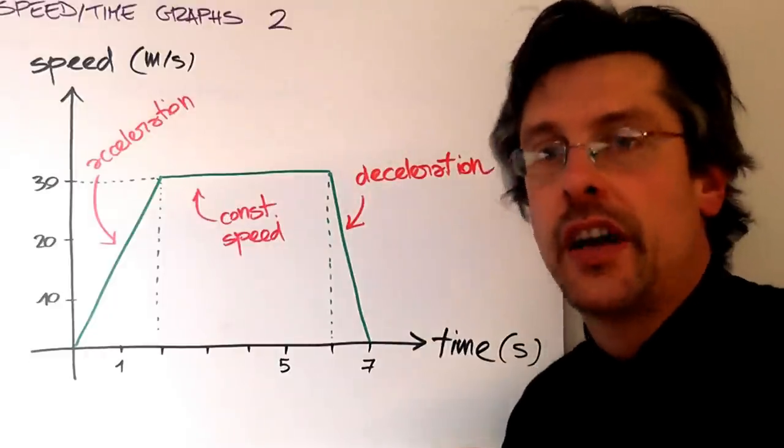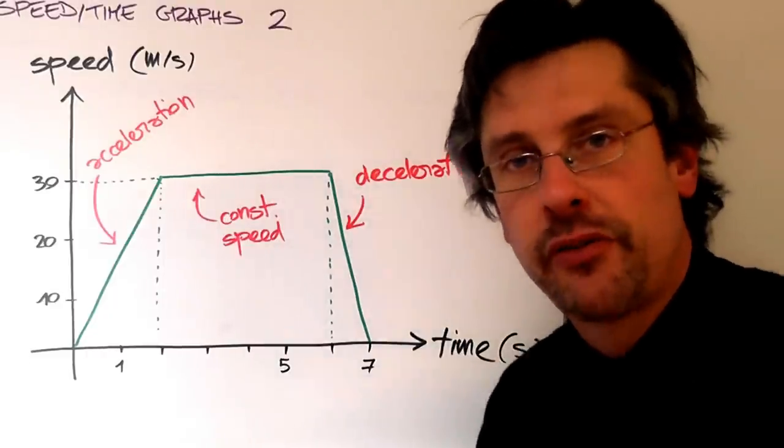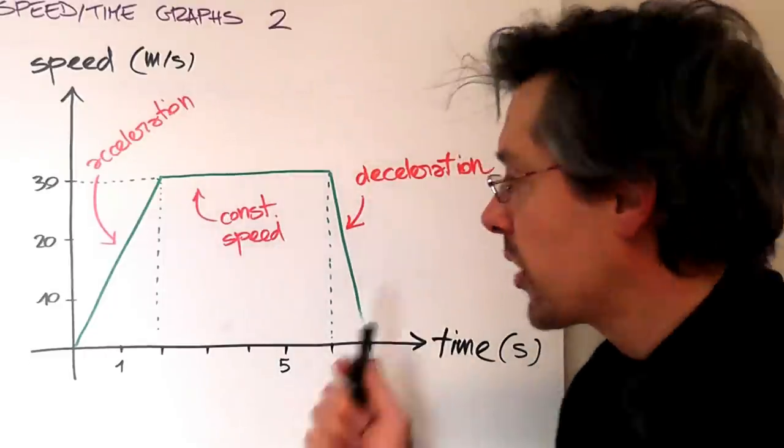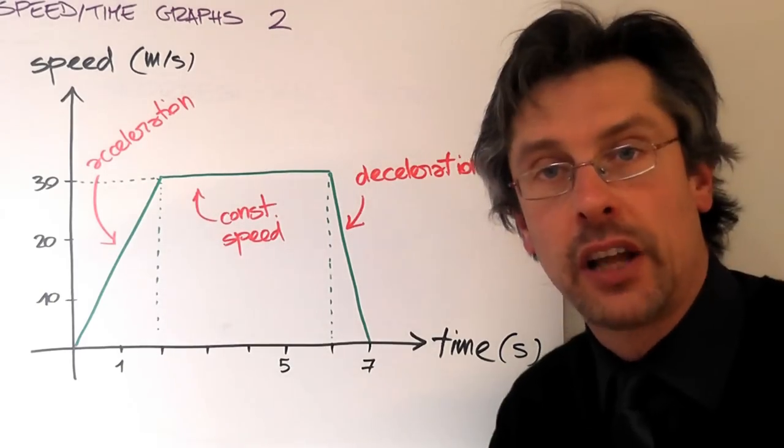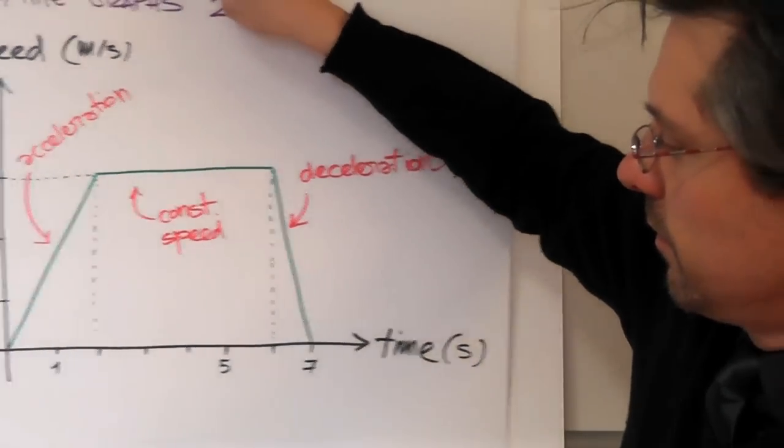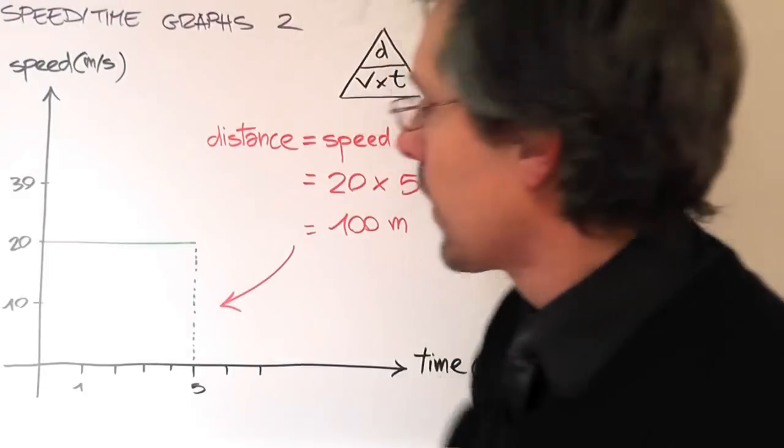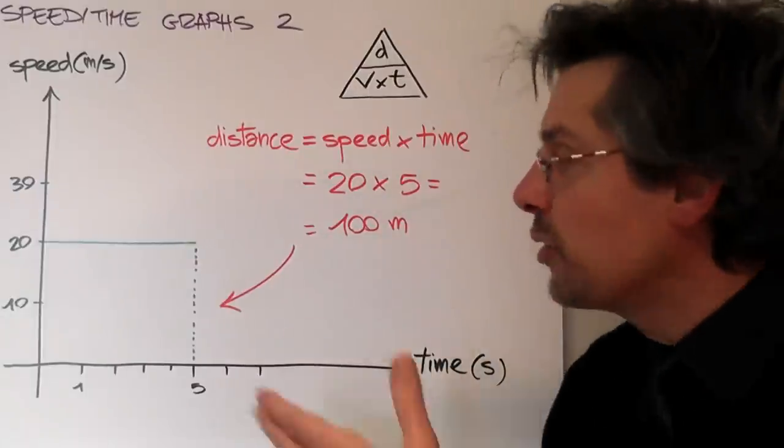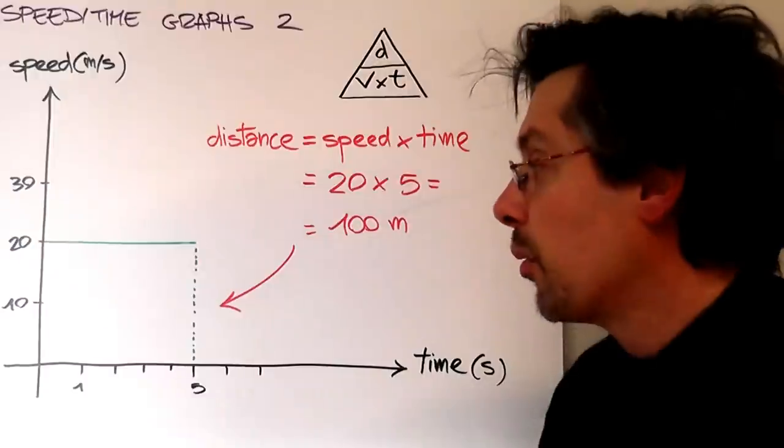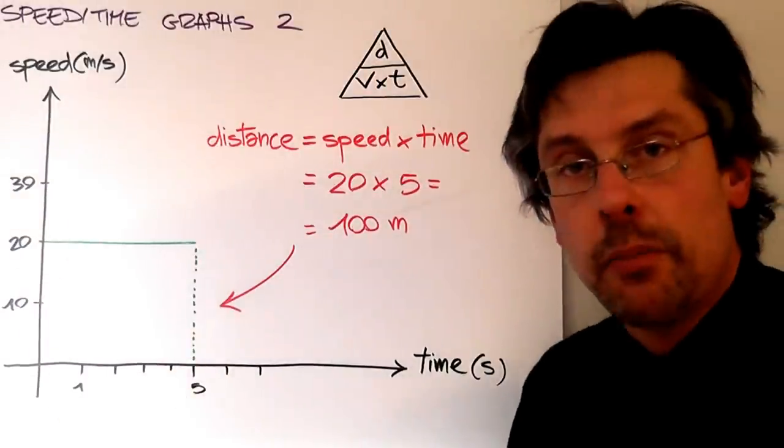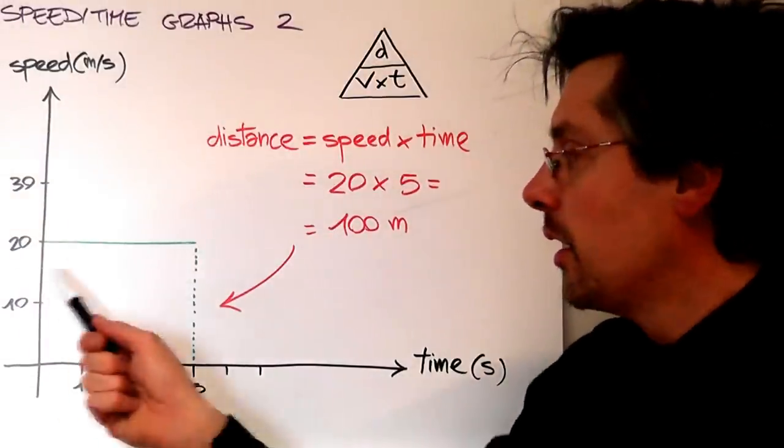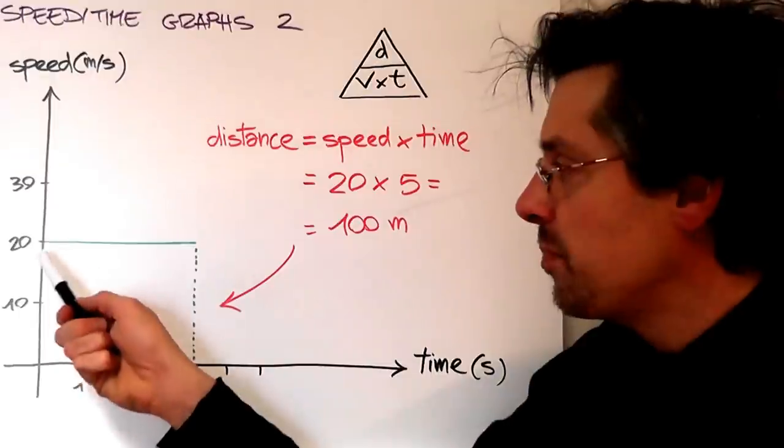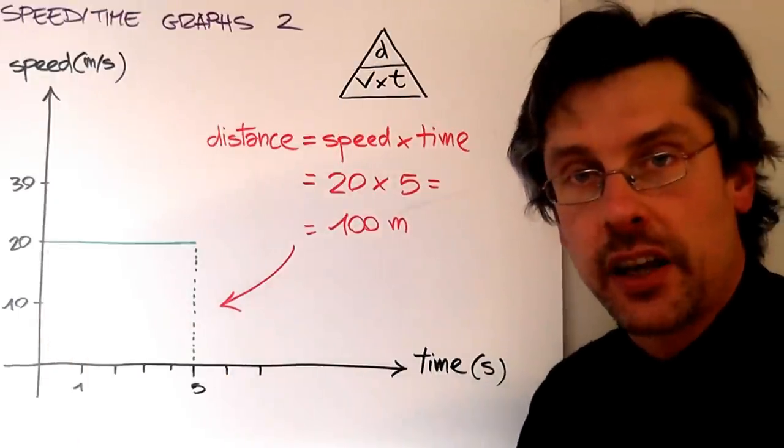Today we're going to learn that there's an additional piece of information that we can extract from a graph like this one. But we have to start with a very easy example, this one. The motion represented here is a constant speed of 20 meters per second.